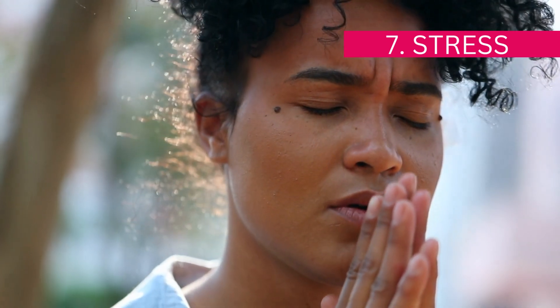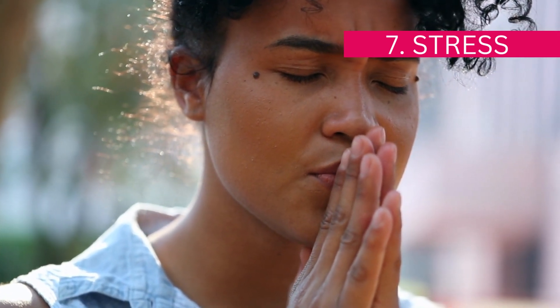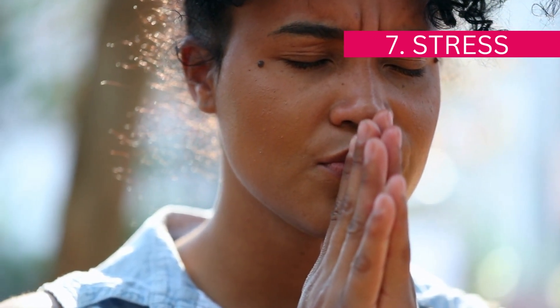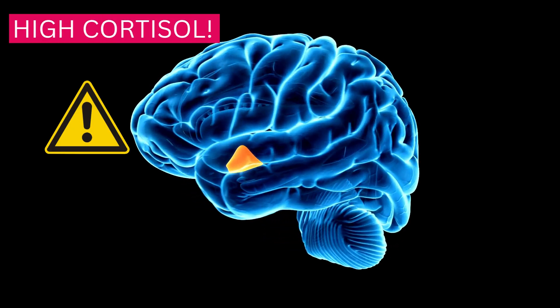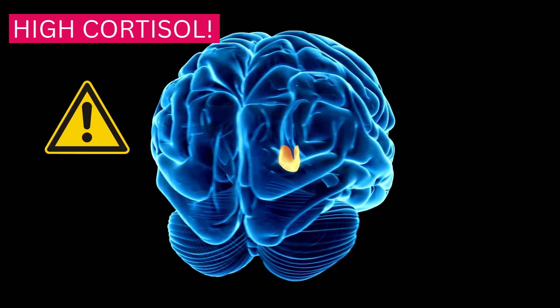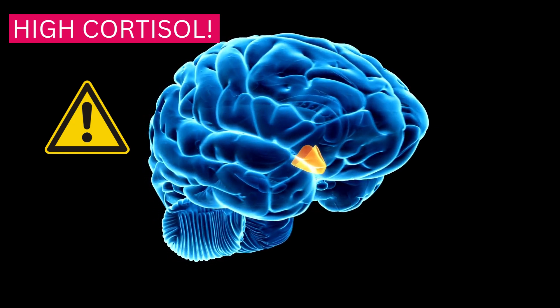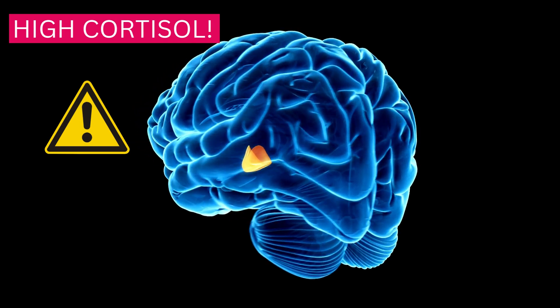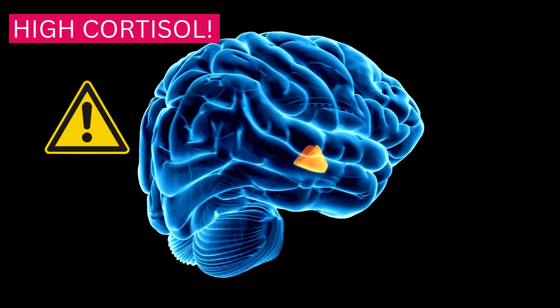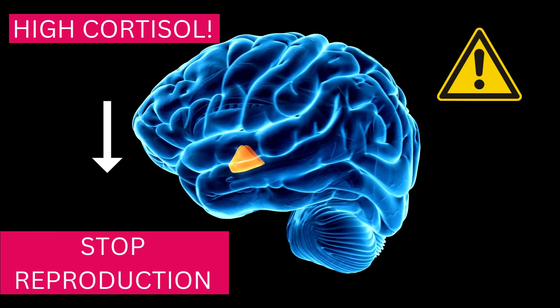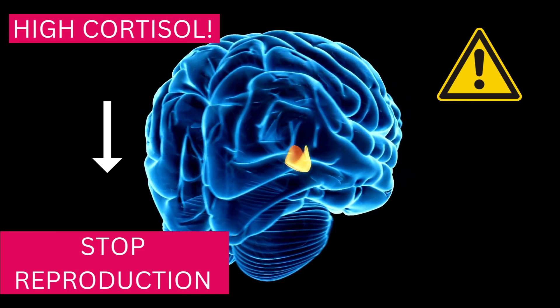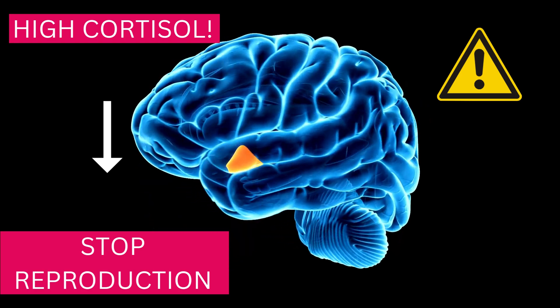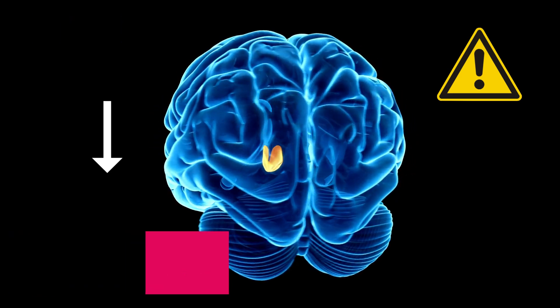Seven is stress. When your body suffers high levels of stress, the brain figures this out and starts secreting a hormone called cortisol. As cortisol levels increase, your brain sees it as your body being in danger and takes steps to move you to safety. One of the ways it does this is by stopping the production of GnRH — gonadotropin-releasing hormone — the hormone that initiates the production of LH and FSH that cause ovulation. So your body shuts down reproduction and focuses on keeping you safe. Managing stress is so important.